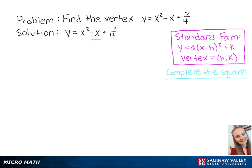To complete the square, we take the coefficient of x and multiply it by 1/2. So we get 1/2 times -1 equals -1/2. Then we square it, which gives us 1/4.